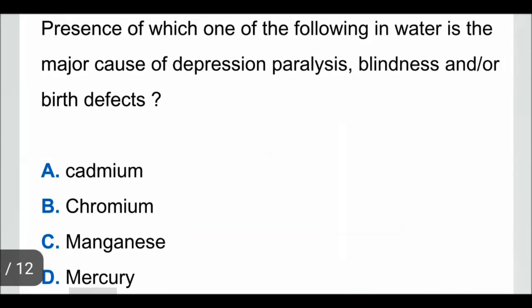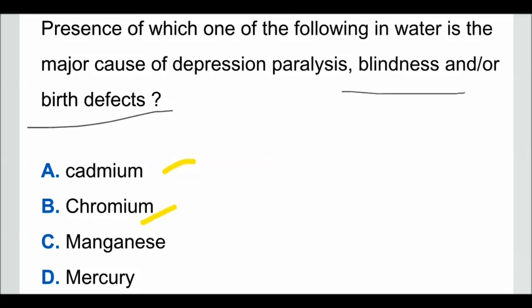The second question: presence of which one of the following in water is a major cause of depression, paralysis, blindness, and/or birth defects? The four options are: option A, cadmium; option B, chromium; option C, manganese; option D, mercury.